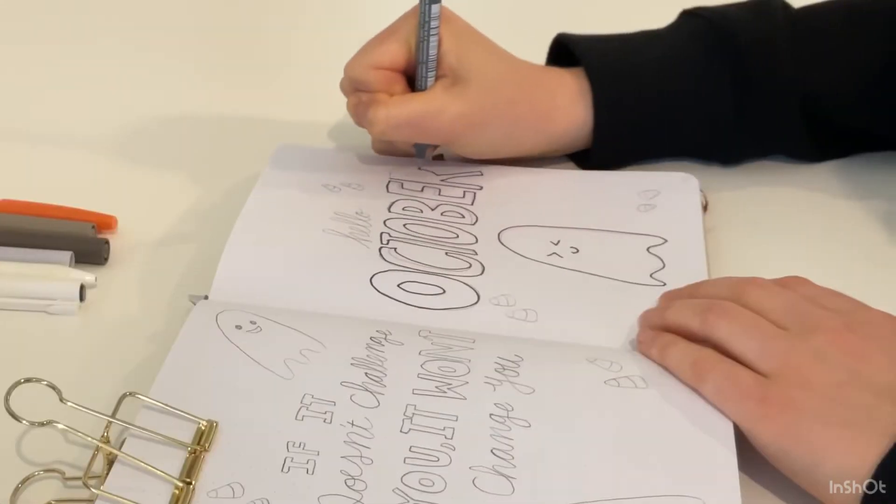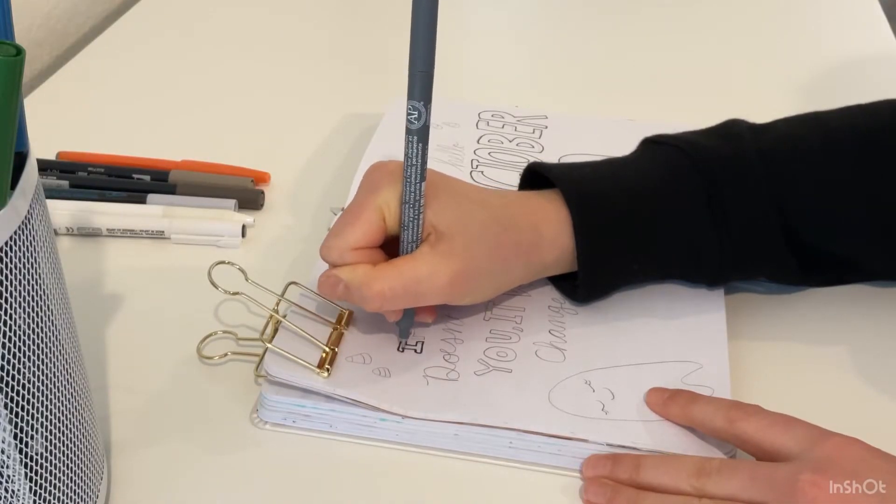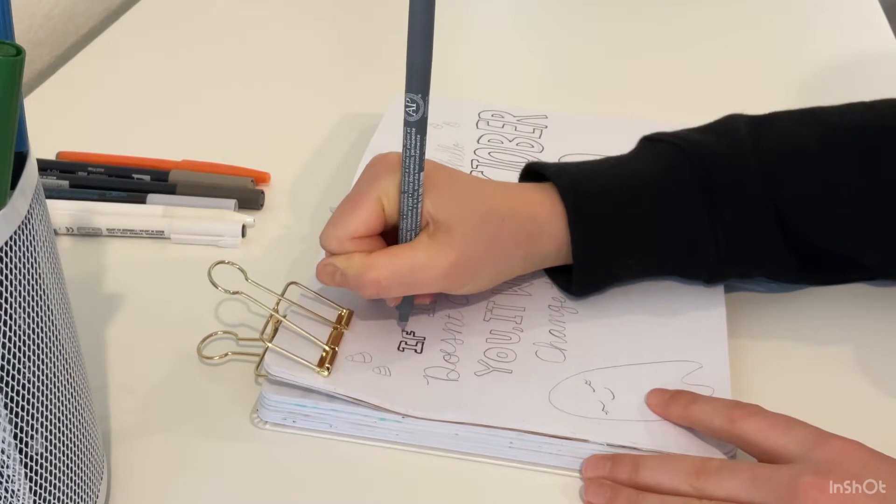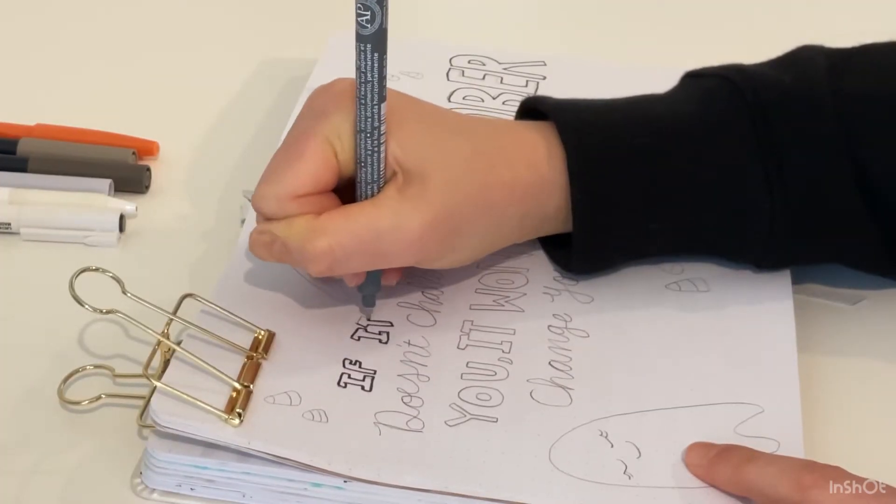Now I'm going to go ahead and finish up the October in the block letters and then we can go ahead and move on to the quote page on the other side. I'm mixing it up with some block letters and some cursive just to give it a little bit of a fun feel.